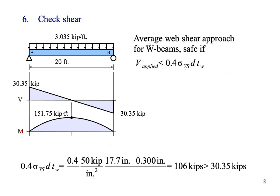The last step is to check the beam for shear failure. This is actually a pretty rare failure mode in structural beams, but it can happen, so we want to check for it. Remember the average web shear approach from Chapter 9? We can rewrite this equation so that the beam is safe as long as the maximum applied shear load is less than 0.4 times the yield strength times the depth of the beam times the thickness of the web. You can find these values in Appendix D. Plug them into the equation, and we find that the beam can support a shear load of 106 kips. We have a shear load capacity of 106 kips, but we are only applying 30.35 kips. We have more than we need. Therefore, the beam is safe in shear.